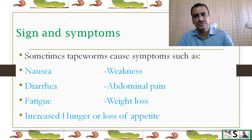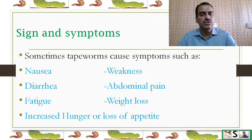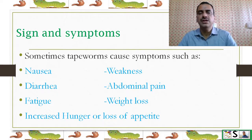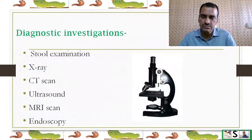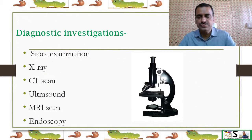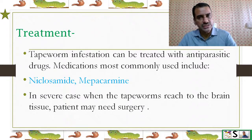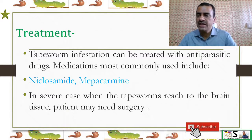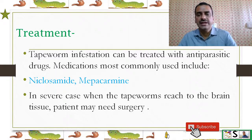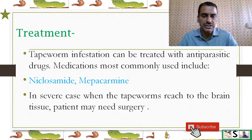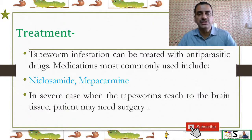Signs and symptoms of tapeworm include nausea, weakness, diarrhea, abdominal pain, fatigue, weight loss, and increased hunger or loss of appetite. Diagnostic investigations include stool examination, X-ray, CT scan, ultrasound, MRI, and endoscopy. Treatment: tapeworm infestations are treated with anti-parasitic drugs; medications most commonly used are niclosamide and praziquantel. In severe cases, when the tapeworm reaches brain tissue, surgery may be needed.